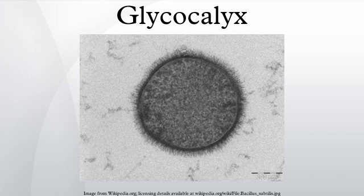The glycocalyx is a type of identifier that the body uses to distinguish between its own healthy cells and transplanted tissues, diseased cells, or invading organisms. Included in the glycocalyx are cell adhesion molecules that enable cells to adhere to each other and guide the movement of cells during embryonic development.